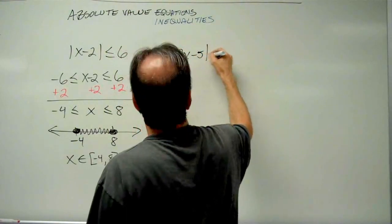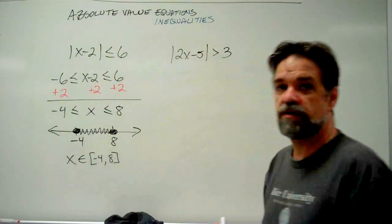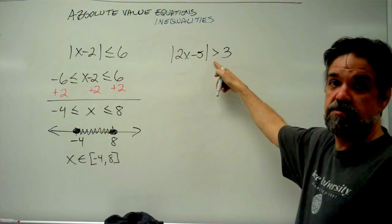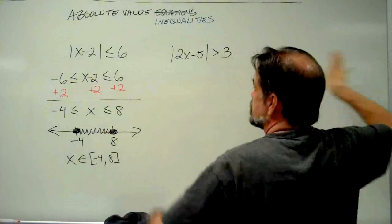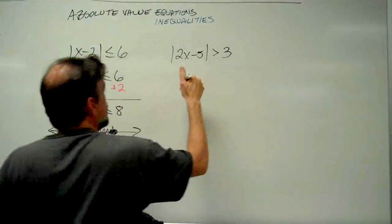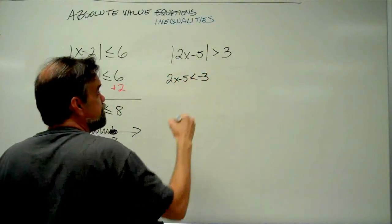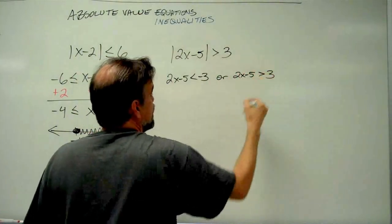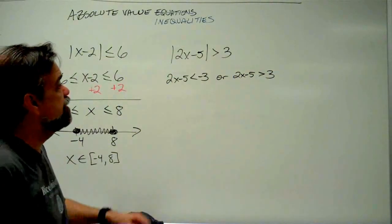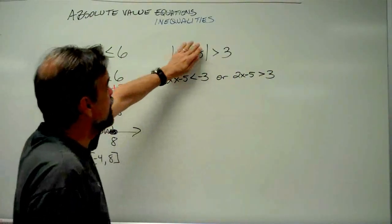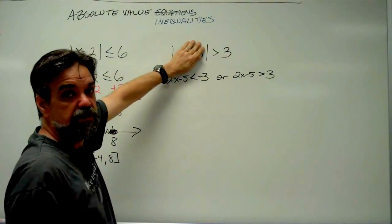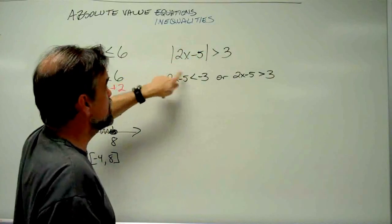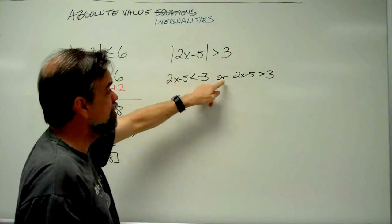Let's do another problem: the absolute value of 2x minus 5 is greater than 3. This time the absolute value is greater than. That means either 2x minus 5 is less than negative 3, or 2x minus 5 is greater than 3. Whatever's inside — if the absolute value is greater than 3 — it would have to be either less than negative 3 or greater than 3 on the number line.